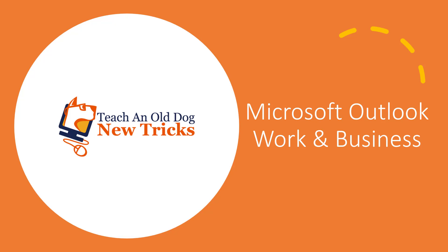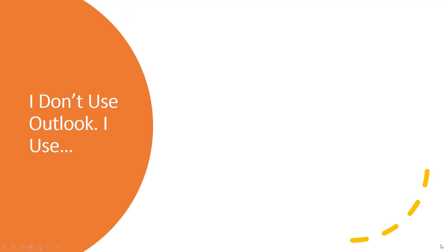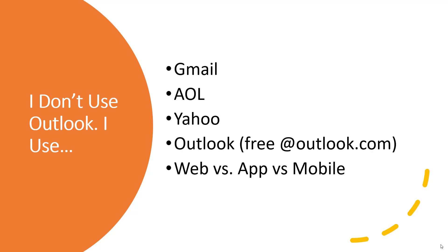I want to tell you a little bit more about Microsoft Outlook and the way this works. Quite often when I'm talking to people, they'll say they don't use Microsoft Outlook — they use something like Gmail or AOL or Yahoo. Outlook actually has a free online tool where you can get an email address at Outlook.com. But today we use email in many different ways — in a web browser, or in an app on our mobile device. So there's more than one way to use email.